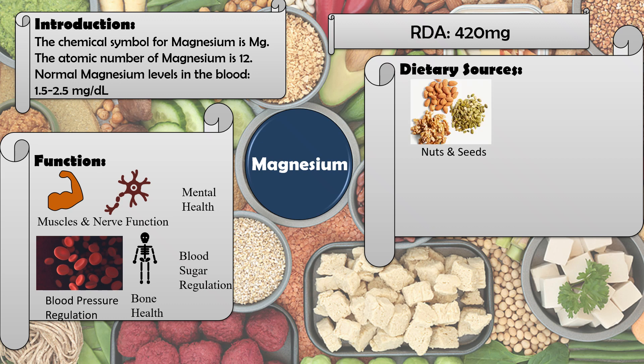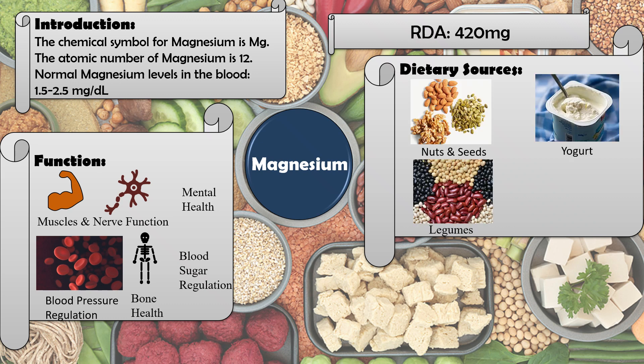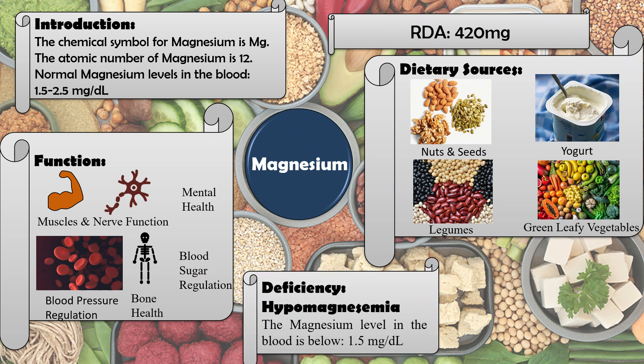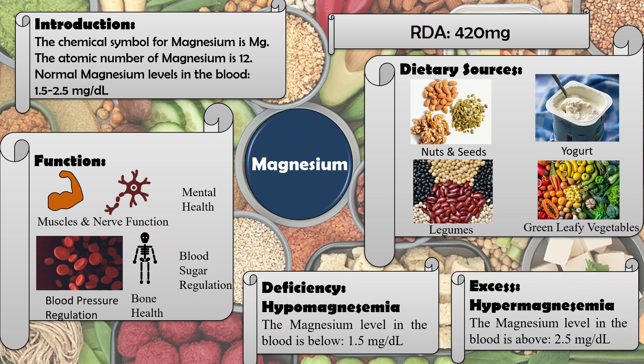The RDA for magnesium is 420 mg. Dietary sources include nuts and seeds, yogurt, legumes, and green leafy vegetables. When magnesium levels fall below 1.5 mg/dL, the deficiency is known as hypomagnesemia.